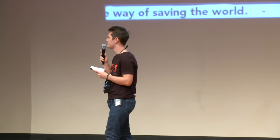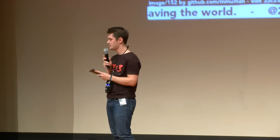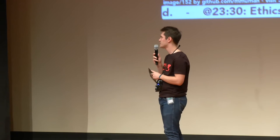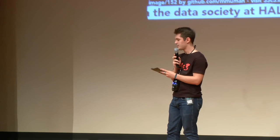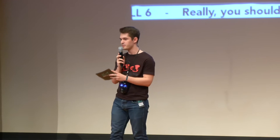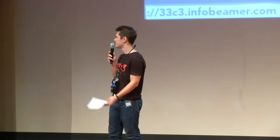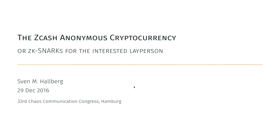Our last speaker for tonight is Sven Hallberg, and he's going to talk about Zcash Anonymous Cryptocurrency. The subtitle of this talk is Zero Knowledge Succinct Non-Interactive Arguments of Knowledge for Lay People. Sven is a mathematician, a coder, a cryptographer. He also does functional programming in C, which probably makes him the person you might want to listen to. Please, a round of applause for Sven.